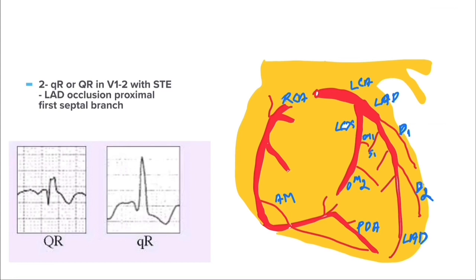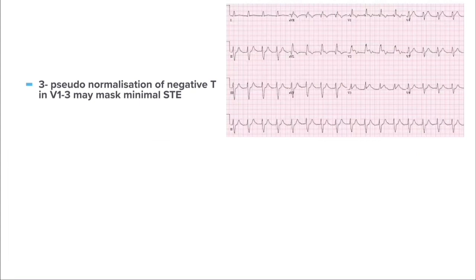The QR pattern in lead V1 or V2 with ST elevation is another important finding. The presence of a QR pattern in V1 or V2 with minimal ST elevation indicates left anterior descending artery occlusion proximal to the first septal branch. Additionally, pseudonormalization of the negative T wave in leads V1 to V3 may mask minimal ST elevation — we already discussed that T waves are inverted in V1 to V3 in right bundle branch block, so in the presence of ischemia this T wave becomes upright (pseudonormalized), which can mask a very minimal ST elevation in V1 to V3.